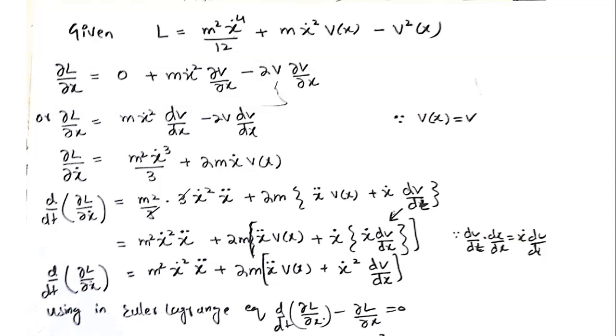Since v is only a function of x, I can change this partial derivative into total derivative. So I can write this as m x dot square dv by dx minus 2v into dv by dx. That's all for partial L by partial x.